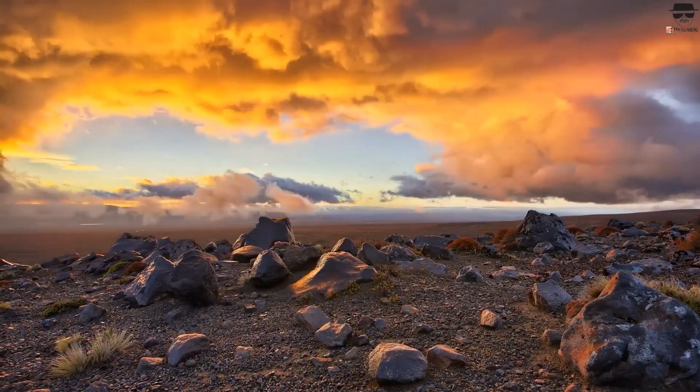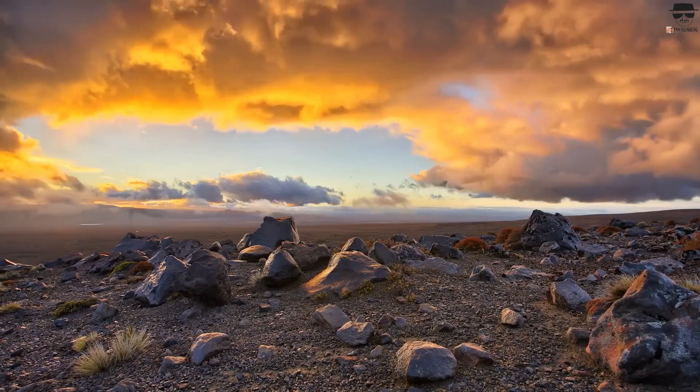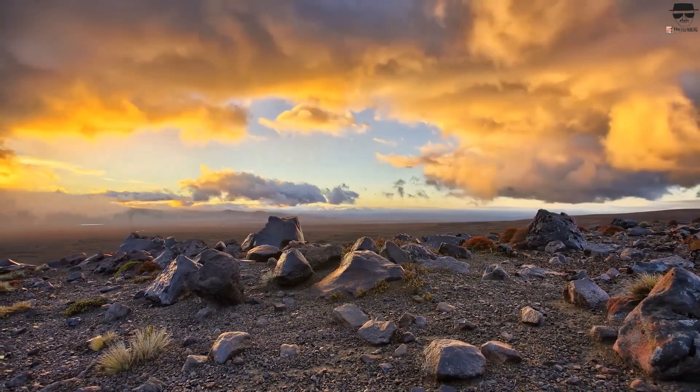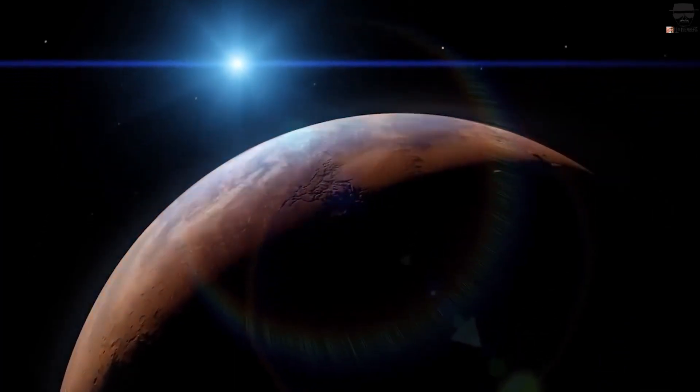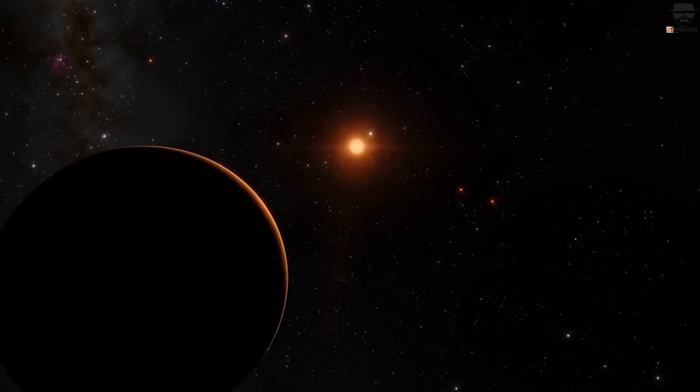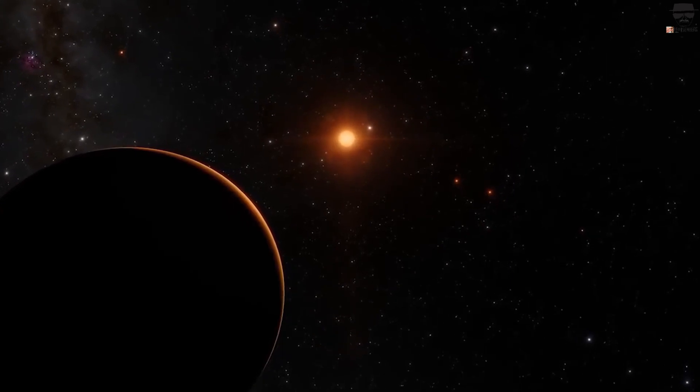Prime candidates may orbit a stable star and have temperatures that permit liquid water to exist on their surfaces. Our sun is characterized as a yellow G-type star, but in our universe these stars are less frequent and typically have shorter lives.